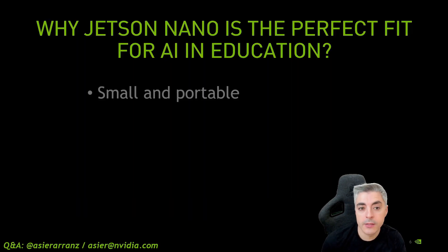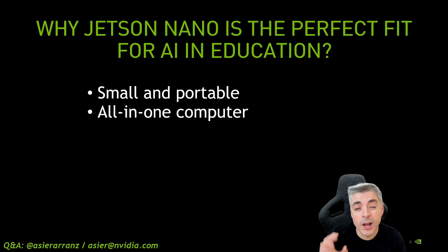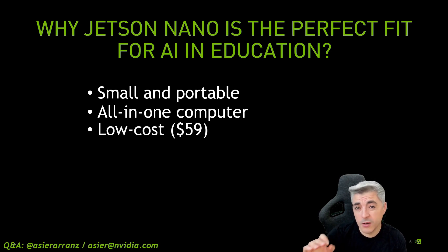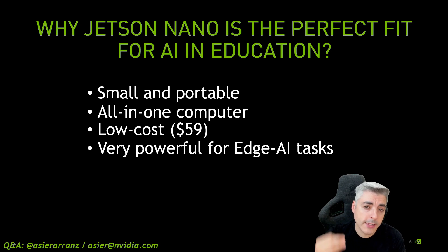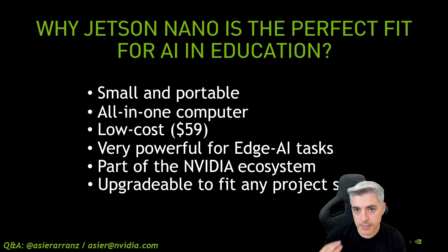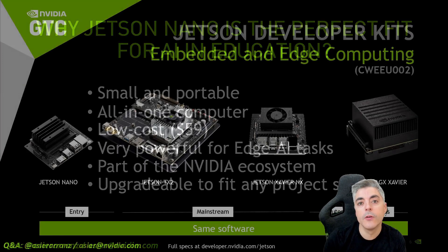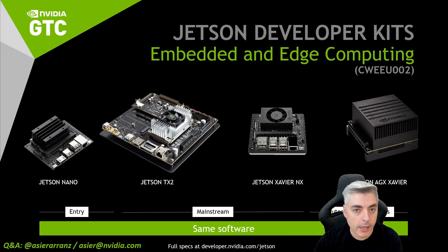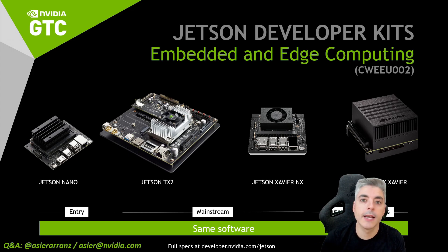Why is Jetson Nano the perfect fit for AI in education? First, it's small and portable — it's an all-in-one computer. You can run a browser with YouTube, Telegram, Visual Studio Code, and almost any software you can run on a desktop. It is really low cost — it costs a bit more than a Raspberry Pi, but it has the power to execute Edge AI tasks with really good performance. It is part of the NVIDIA ecosystem, so you can run AI models with CUDA. And it is upgradable: if you have a big AI model that runs with difficulties on a Jetson Nano, you can go to a bigger model in the Jetson family using the same software. Even if you have a Jetson Nano 2GB and need more memory, you can jump to a 4GB one. If you go to a Xavier, you will have exactly the same compatibility.